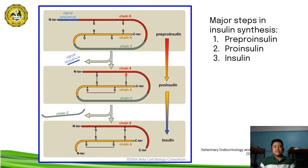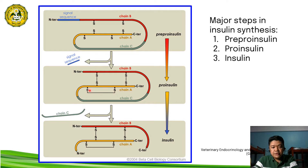Another important process within the endoplasmic reticulum is the formation of disulfide bridges between the B chain and the C chain. These disulfide bridges connect the B chain and the C chain of the proinsulin. There is also the formation of a disulfide bridge that connects two portions of the A chain. After the removal of the signal peptide and after the formation of the disulfide bridges, proinsulin is formed.